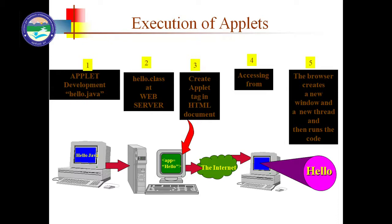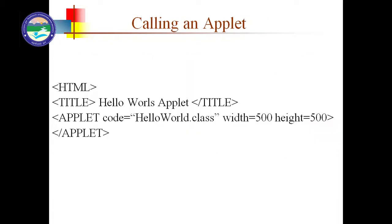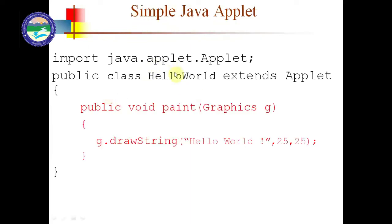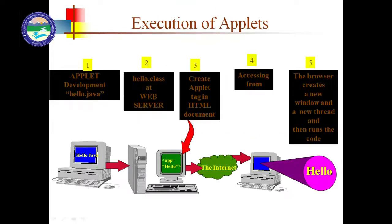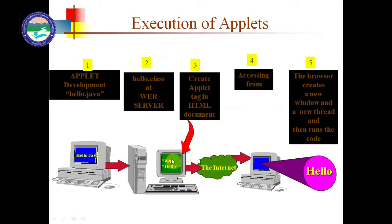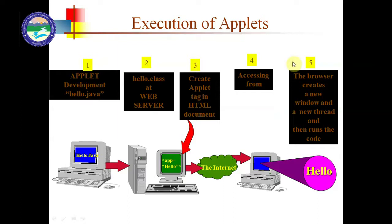How to execute the HTML: the program name is hello.java. First we write the program hello.java, then we compile it and it is converted into hello.class. We place it at the web server, then create an HTML document with the applet tag. We access and execute the HTML file, the browser creates a new window and a new thread and then runs the code. So through these five steps we can execute the Applet program.